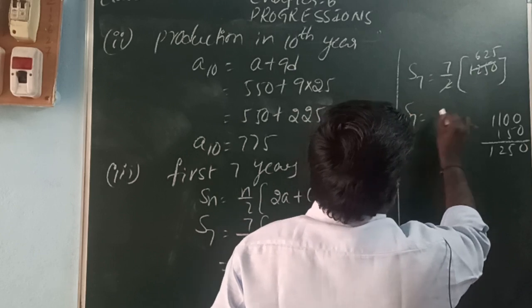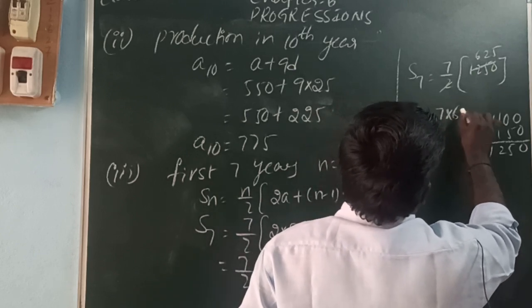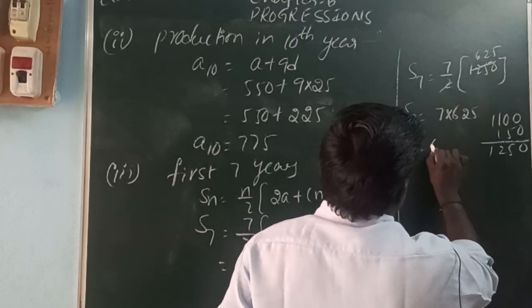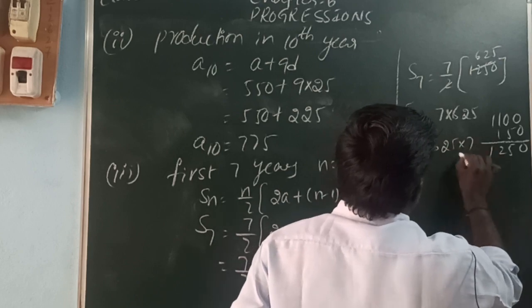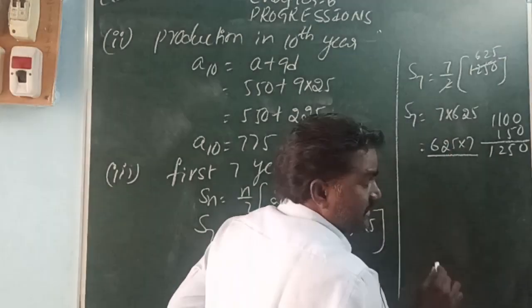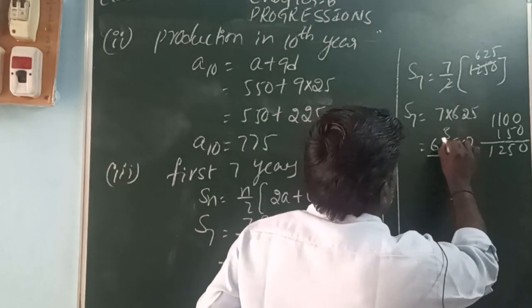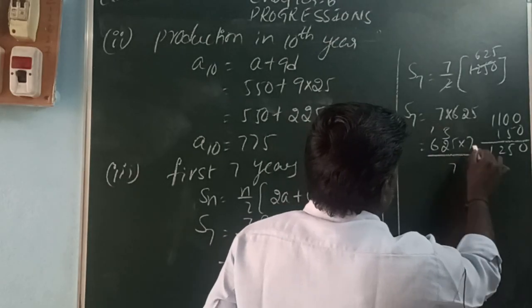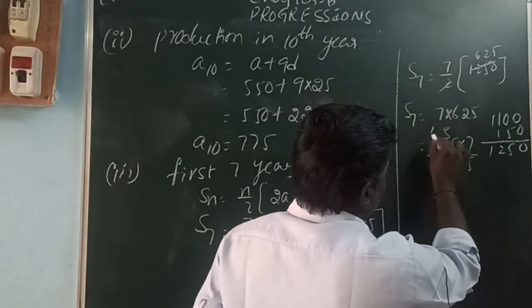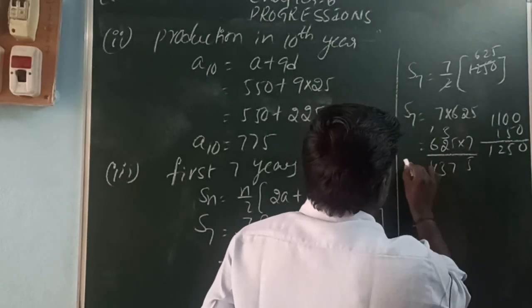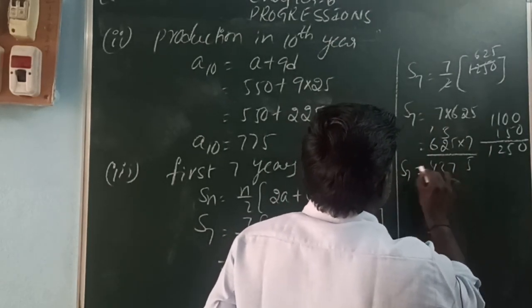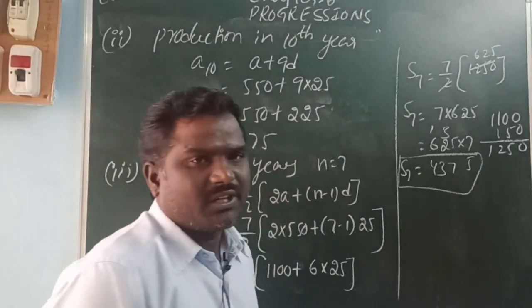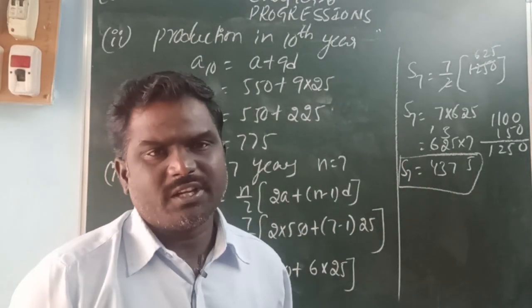S7 = 7 × 625 = 4375. So the total production in the first 7 years is 4375 TV sets.